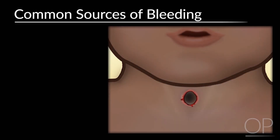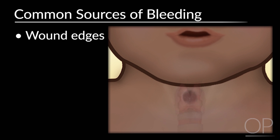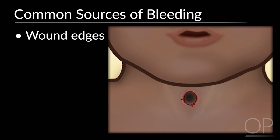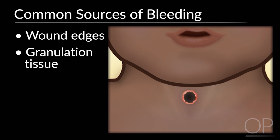Bleeding from around the tracheostomy site is not uncommon. This is seen most often in the early postoperative period and usually relates to bleeding from the surgical site itself. Common sources of bleeding can be from the wound edges, the thyroid gland, or the anterior jugular veins. In the early stages, fresh wound edges may ooze after surgery. Later on, granulation tissue near the wound edges may form and bleed intermittently.